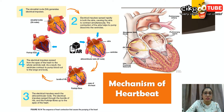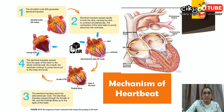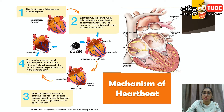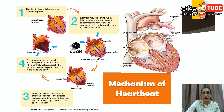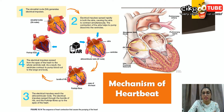This is called the ventricular systole — contraction of the ventricles simultaneously, starting from the apex of the heart upwards. This causes oxygenated blood from the left ventricle to be pushed into the aorta and deoxygenated blood from the right ventricle to be pushed into the pulmonary artery. After the ventricular systole, the whole heart relaxes to allow blood to enter and fill the heart — this is called diastole. Diastole is the relaxation of the heart; systole is the contraction of the cardiac muscles.